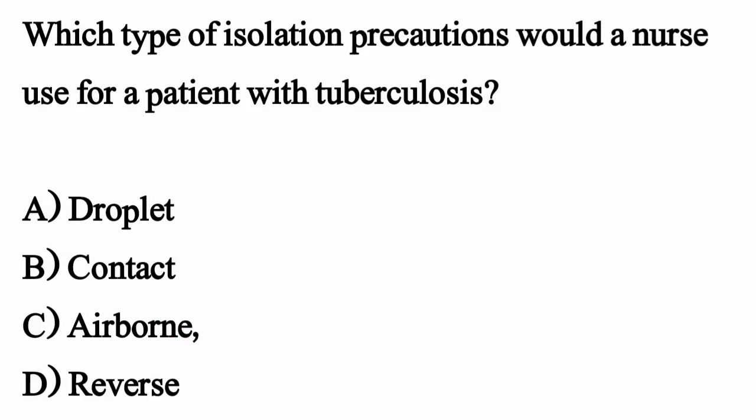Which type of isolation precautions would a nurse use for a patient with tuberculosis? The correct option is option C: Airborne precautions.